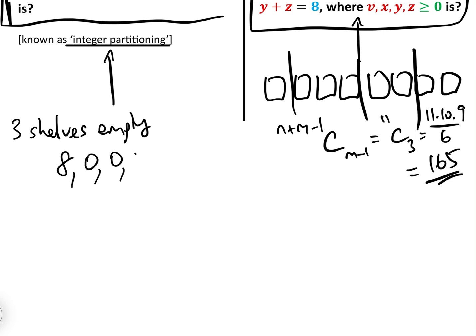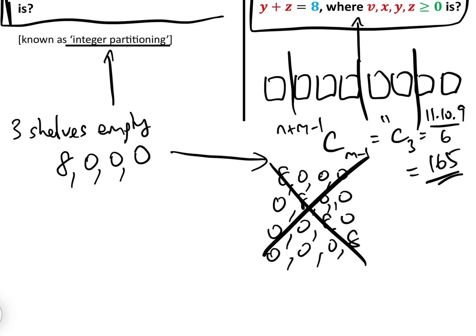If three shelves are empty, how many ways can we distribute the eight identical books between the four identical shelves? Well, it's 8, 0, 0, 0. That's it. There's only one possibility. And by the way, if it was distinct shelves, then we would have 8, 0, 0, 0, then 0, 8, 0, 0, and 0, 0, 0, 8. If it's distinct shelves. If it's identical shelves, we only have one.